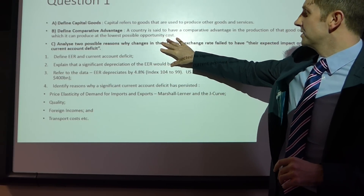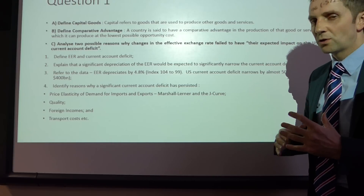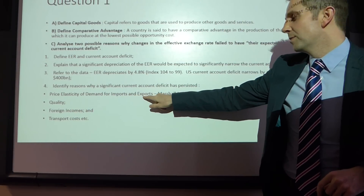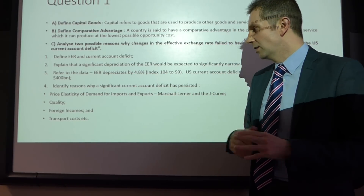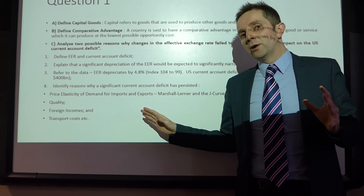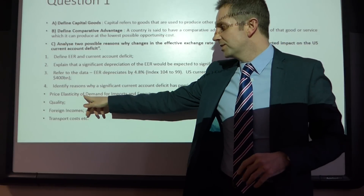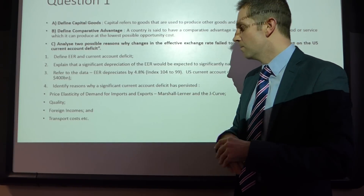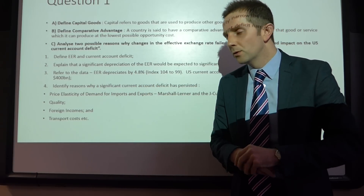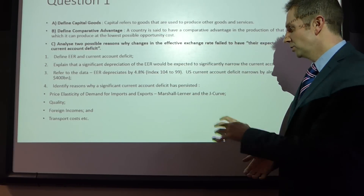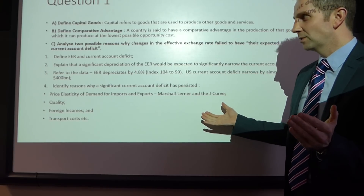I've given a number of reasons here, so analyse two you're most comfortable with. It could be to do with the price elasticity of demand for imports and exports — the Marshall-Lerner condition — where if the sum of elasticities is greater than one, obviously being elastic, you want very significant changes in quantities of both exports and imports in order to narrow the deficit. You could also draw the J-curve and explain that. But it's only a six-mark question, so don't go into too much depth.